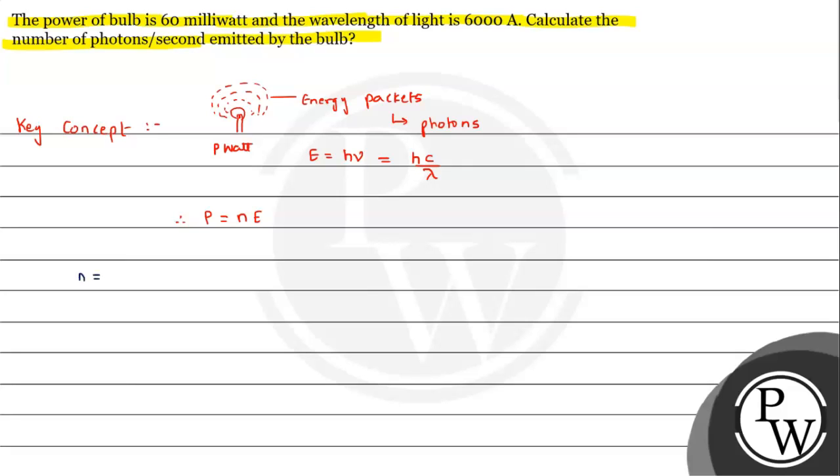The number of photons per second is n = P/E. Since E = hc/λ, we can write n = Pλ/(hc).